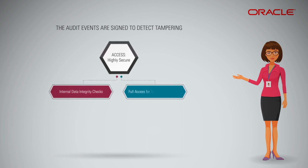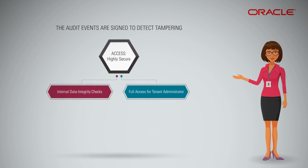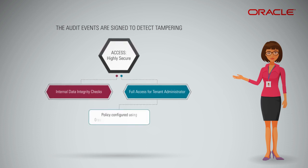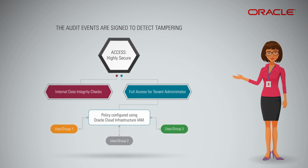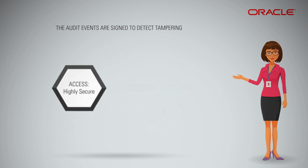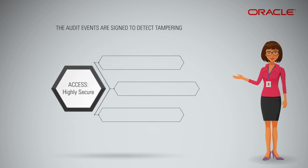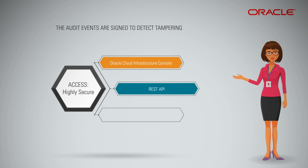Every tenant administrator has access to read audit log events in every compartment in the tenancy. To allow other groups of users to view and manage audit logs, you must configure a policy using Oracle Cloud Infrastructure Identity and Access Management Service, or IAM. You can access the audit service using the console, REST API, or SDKs.